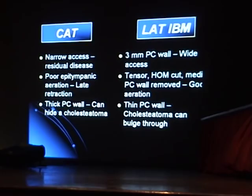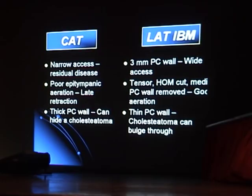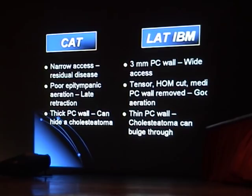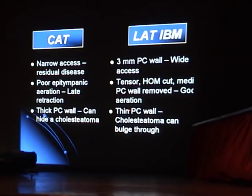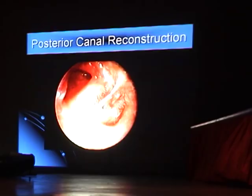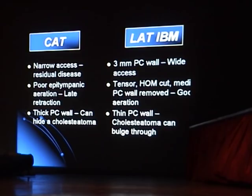With lateral IBM, a three-millimeter posterior wall provides wide access. The tensor and head of the malleus are removed, giving good aeration. The thin posterior canal wall means cholesteatoma cannot bulge into the brain — there is no such risk.